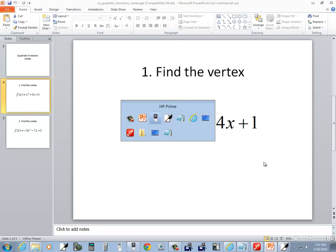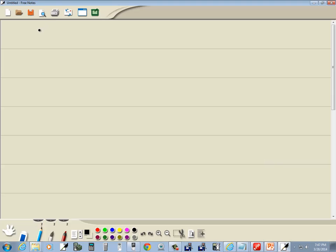Let's take a look at this one. I'm going to show these with the graphical view. f(x) = x² + 4x + 1, and I want to find the vertex.